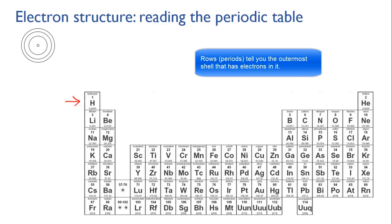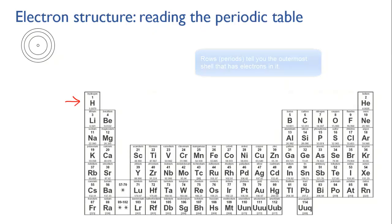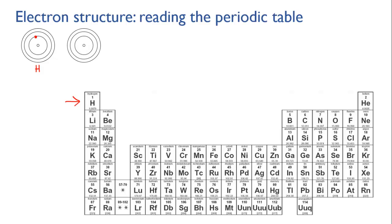In an ordinary neutral atom, the number of protons equals the number of electrons. Let's look at hydrogen — it has one proton in the nucleus, which means it has one electron in its first shell. Helium has two protons, so it must have two electrons, which go in the first level.